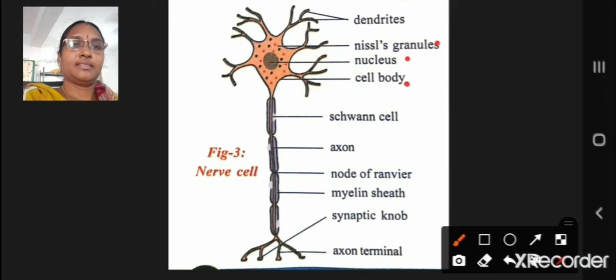These are nissl granules in the cell body. There are fine projections mainly of two types extending from the cell body of the nerve cell.